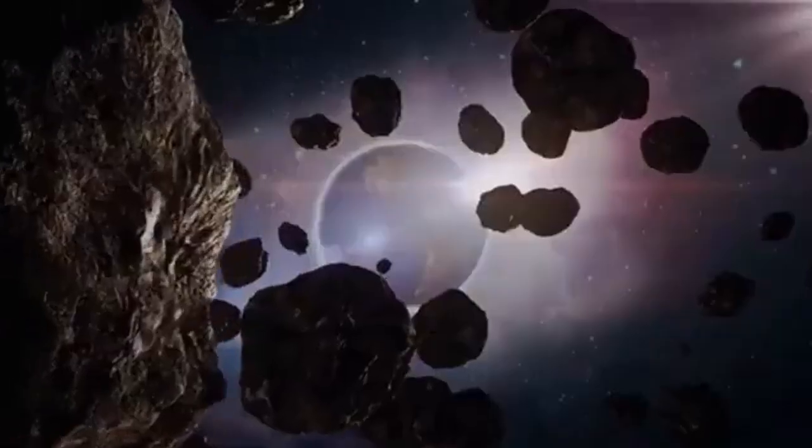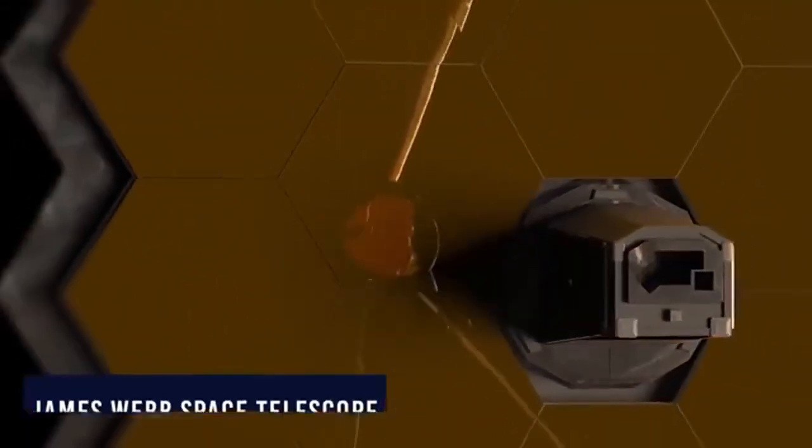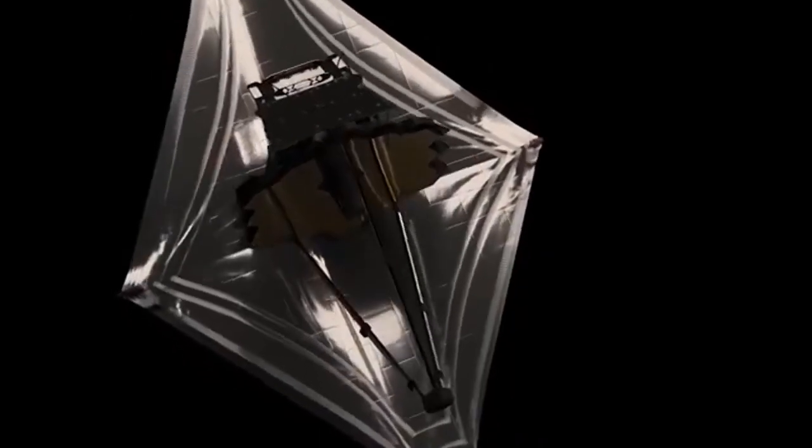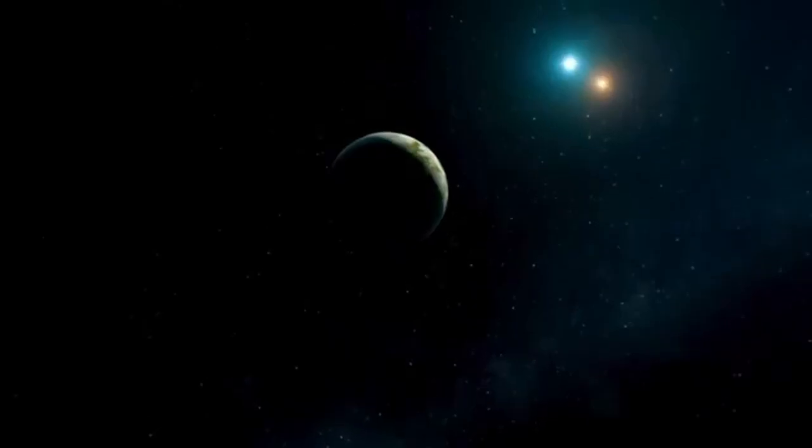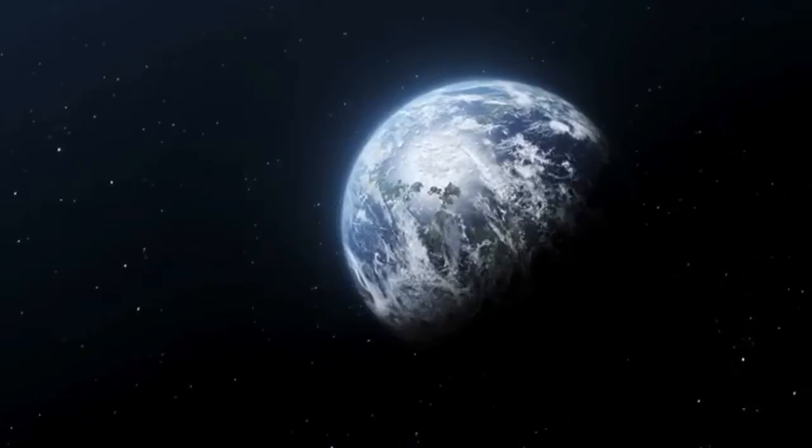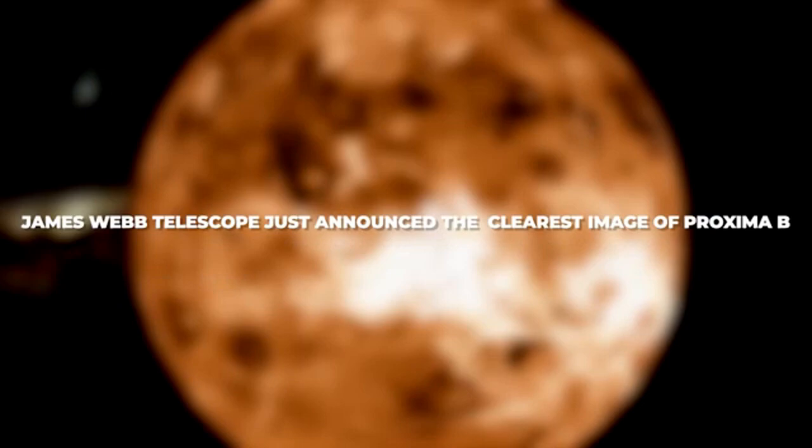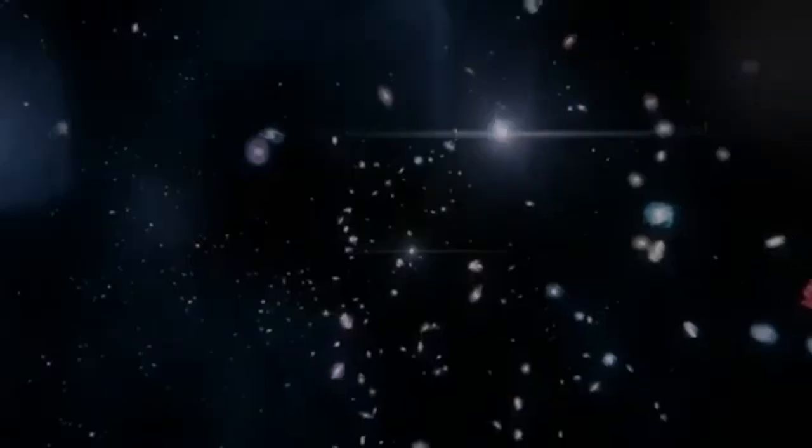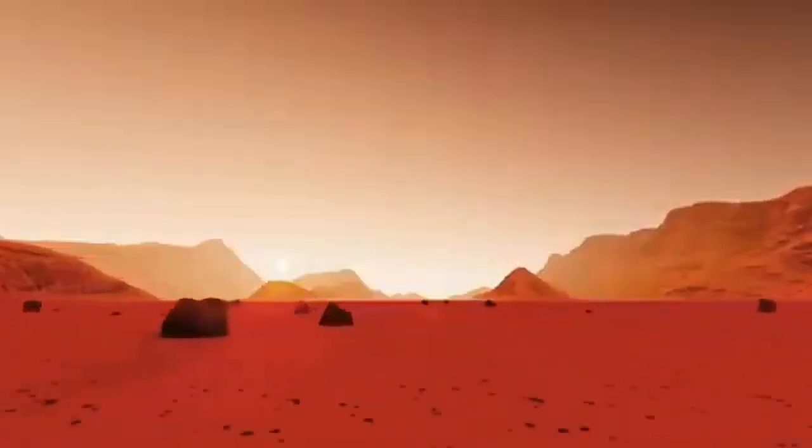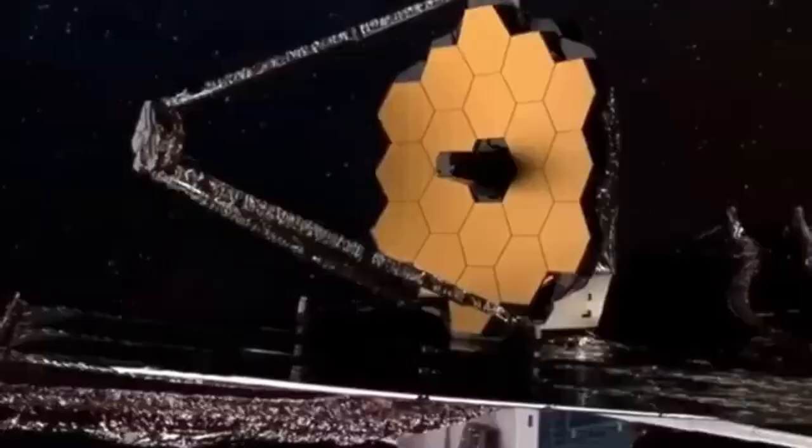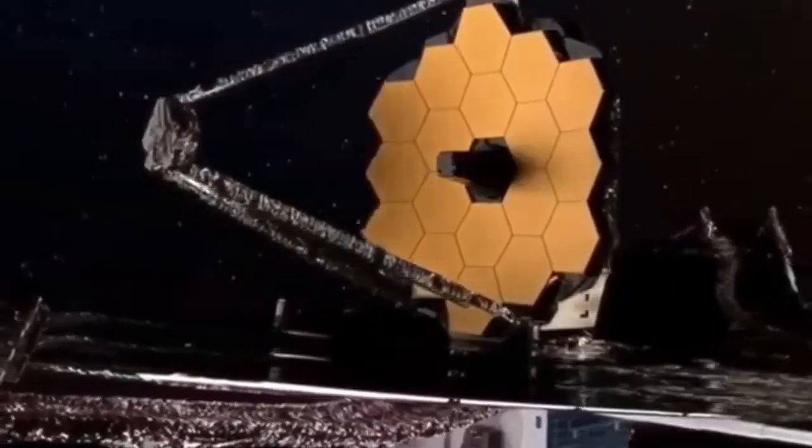Launched in December 2021, the JWST represents a leap forward in space observation capabilities. Located at the second Lagrange point L2, approximately 1.5 million kilometers from Earth, the telescope is equipped with a 6.5 meter primary mirror composed of 18 hexagonal segments. This mirror, much larger than those of its predecessors like the Hubble Space Telescope, allows the JWST to capture faint infrared light from the most distant and ancient objects in the universe.